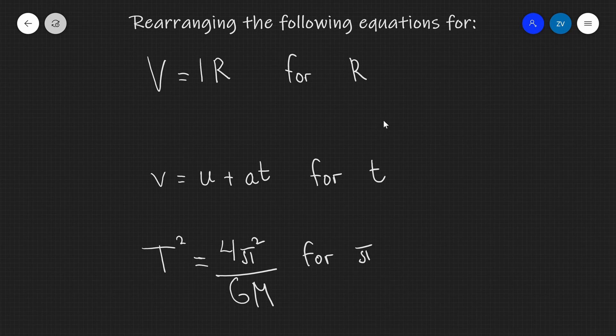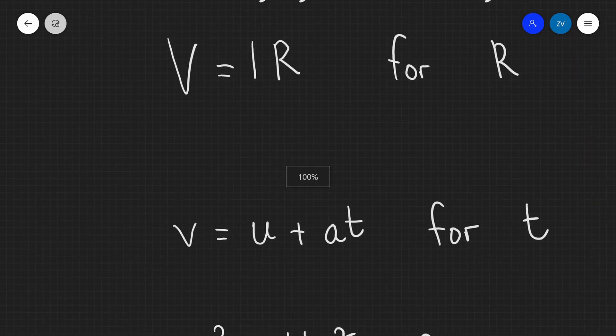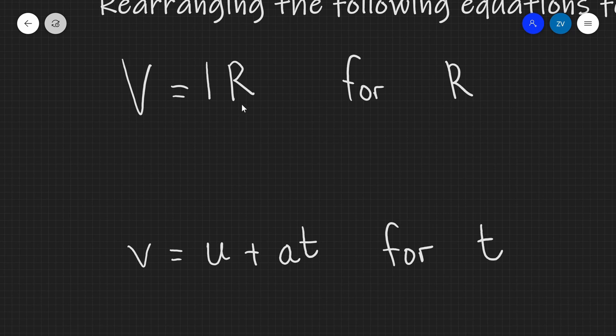They kind of go easy, medium and a little bit harder. Now, if we were to look at the first example, we're going to notice that we have Ohm's law V is equal to IR and we need to rearrange this for R.